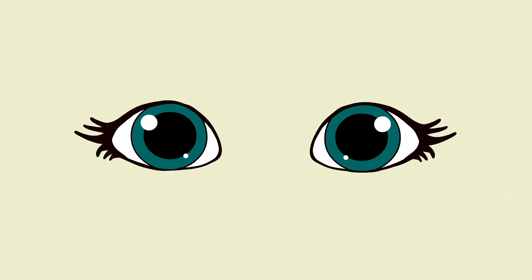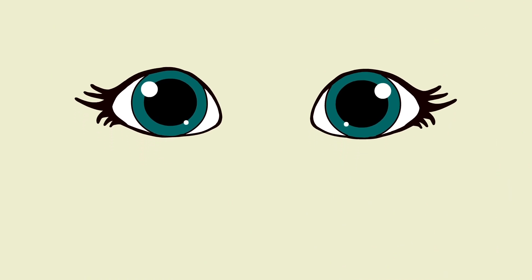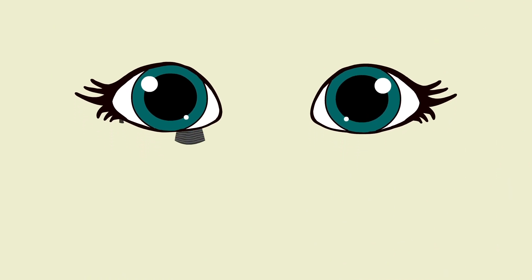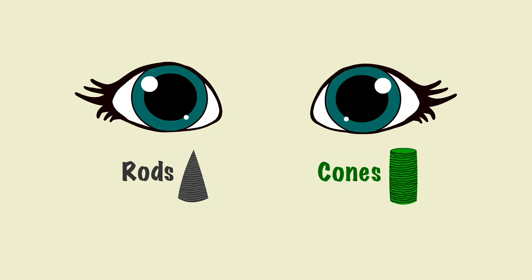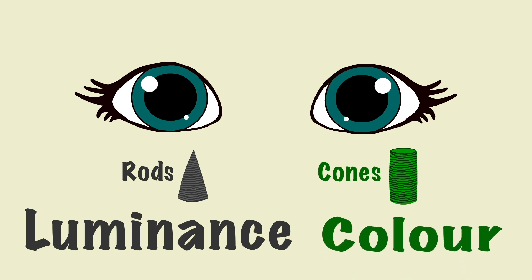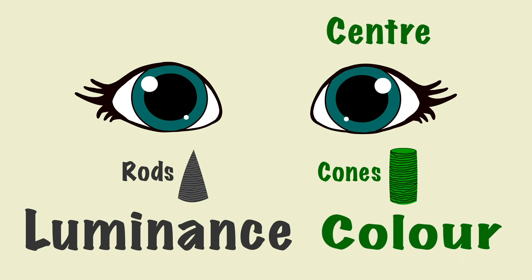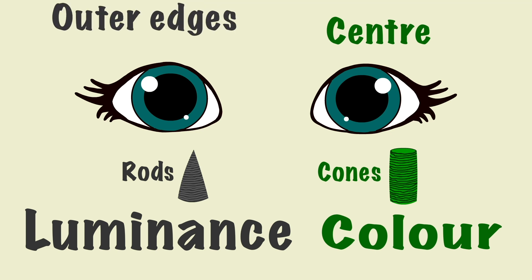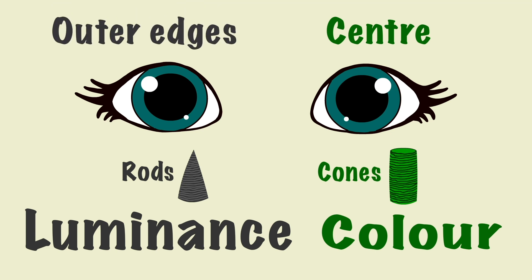We have two types of light receptors in our eyes: rods and cones. Rods are best for perceiving luminance, and cones are best for perceiving colour. There are more cones in the centre of your eye, and more rods on the outer edges of our eye.